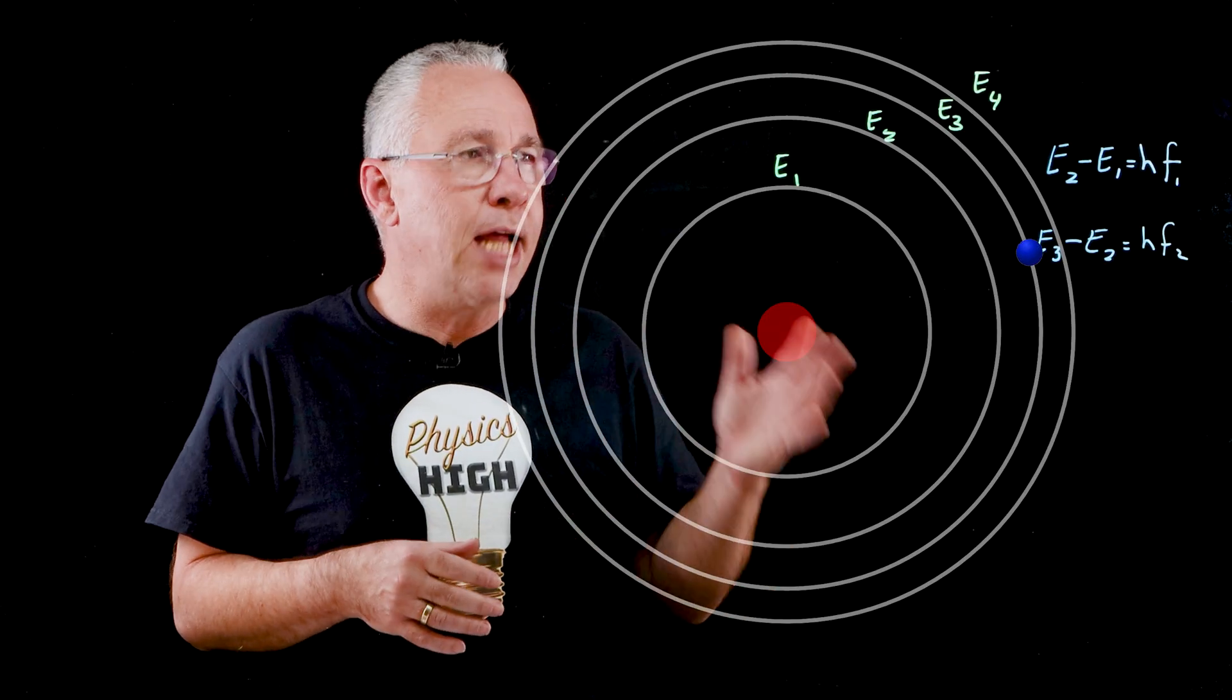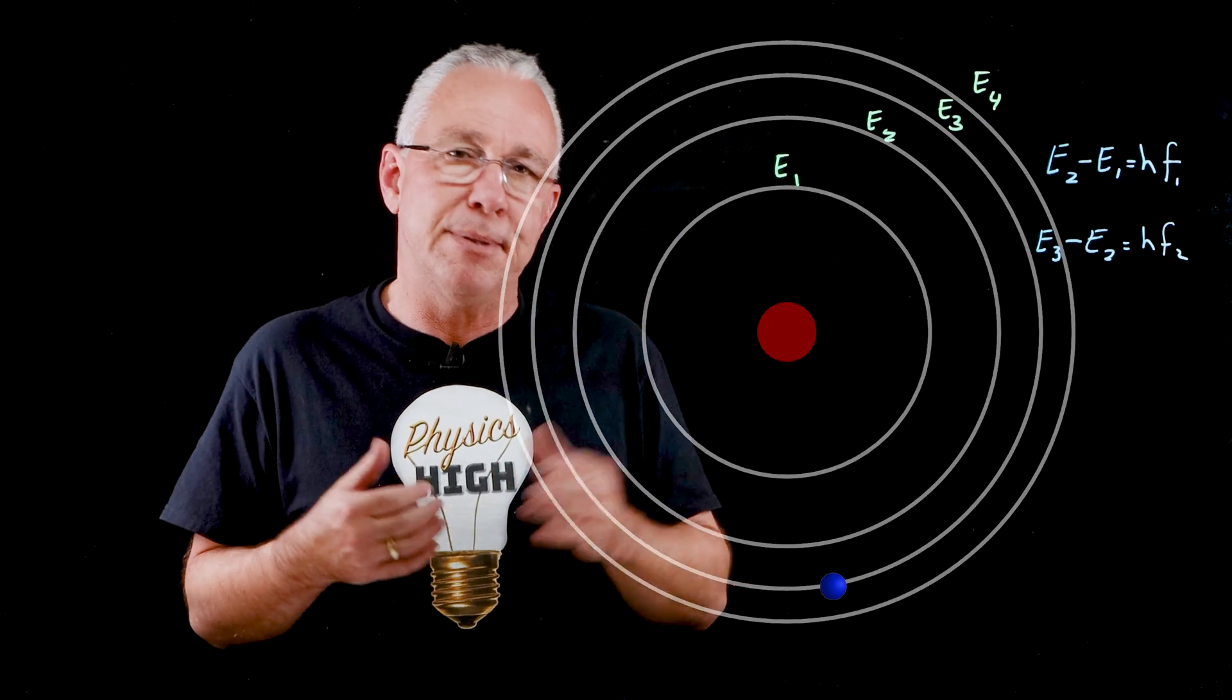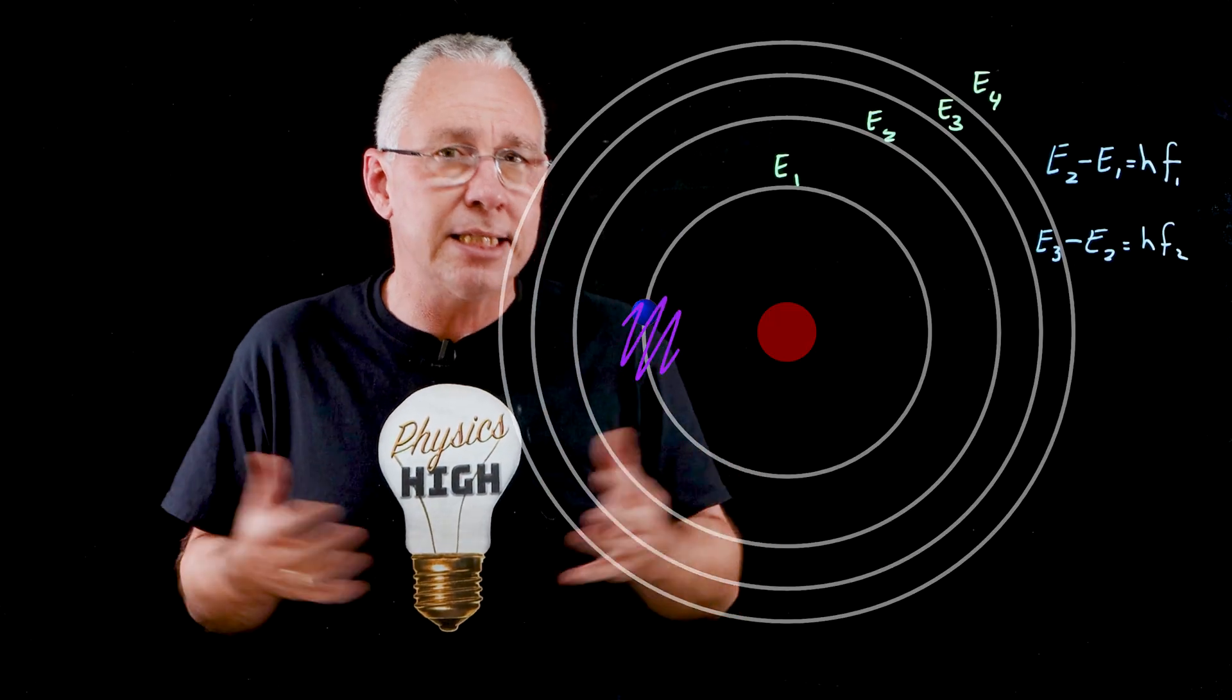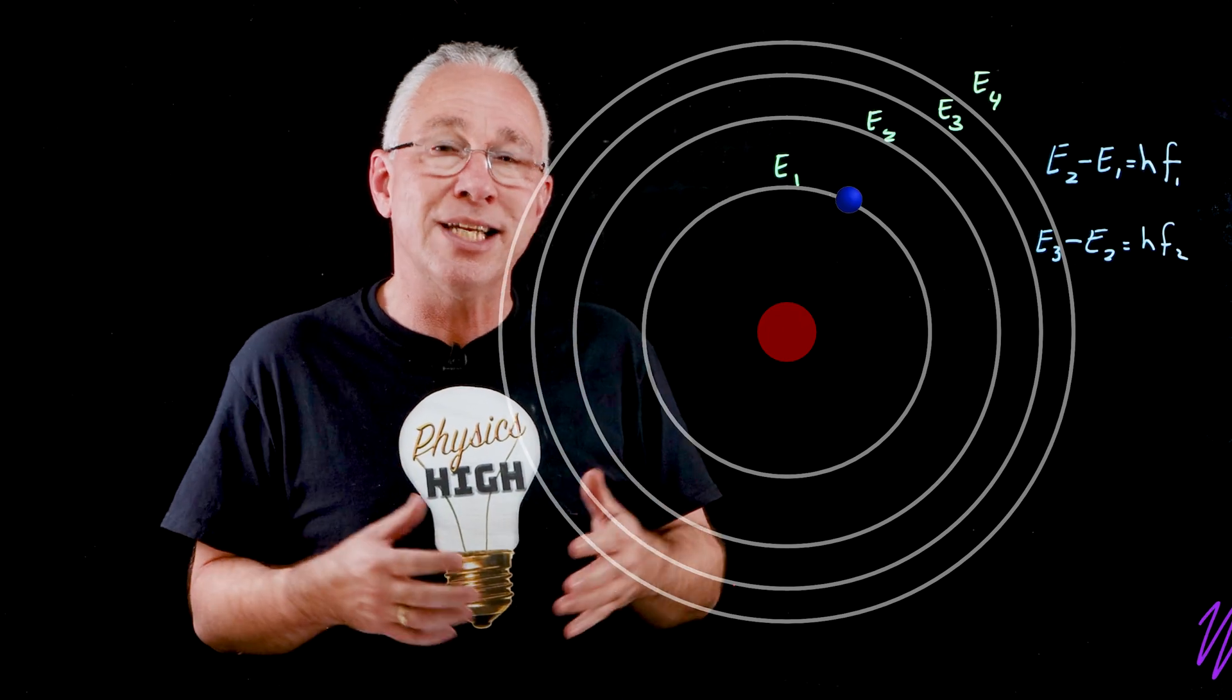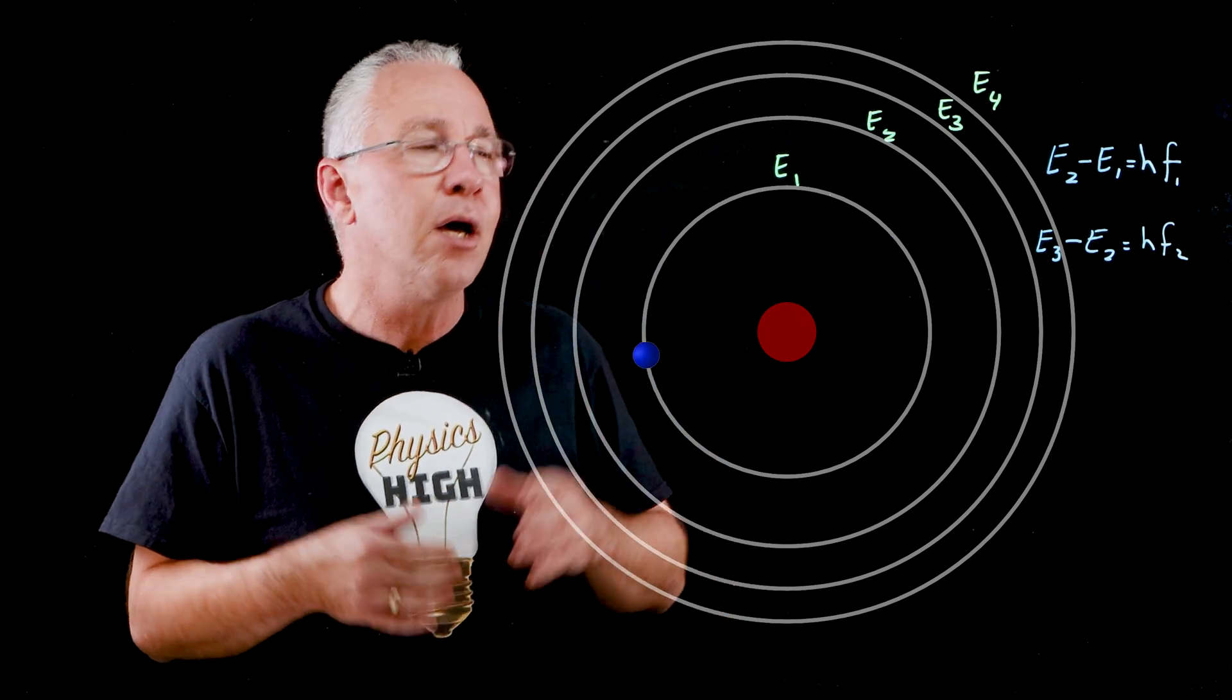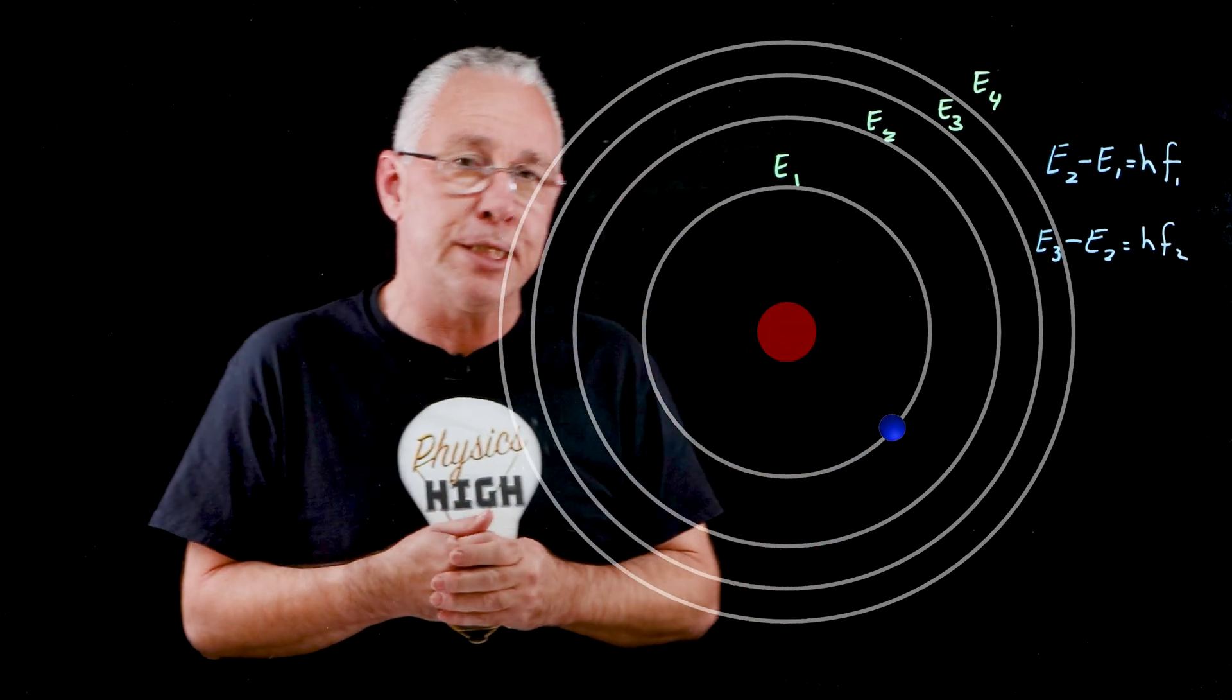However, it's also true that the electrons can jump down a particular energy level and therefore release energy. The difference between the energy levels will result in a photon being emitted with a very specific frequency.